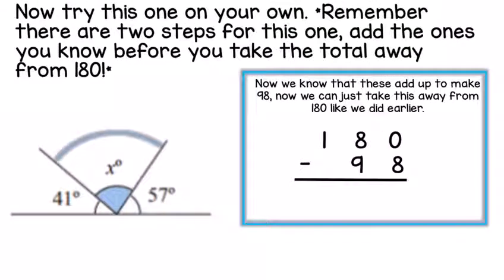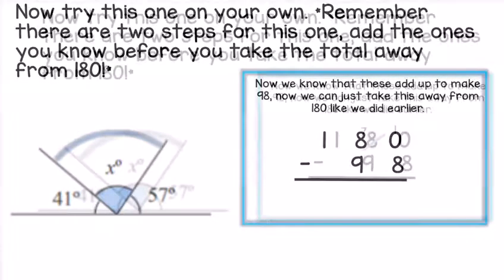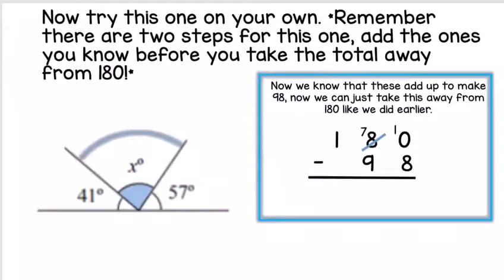Now we know that total, that's the number we need to take away from 180. Using column subtraction, 180 take away 98. We can't do 0 take away 8, so we need to exchange from the 8. Swap the 8 with a 7, carry over the 1 to make 10, and now we can complete our question.